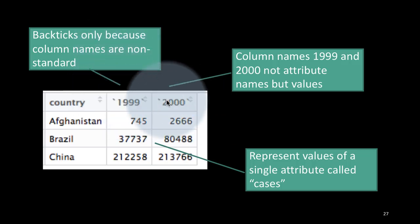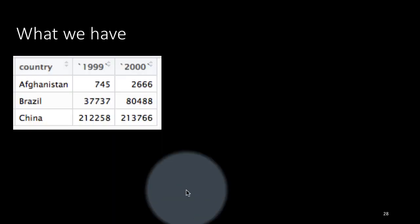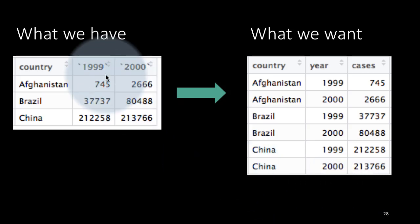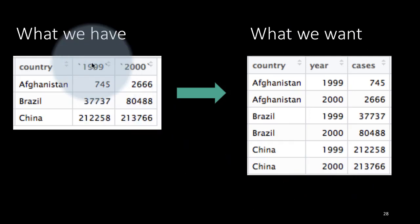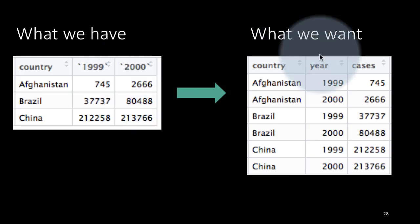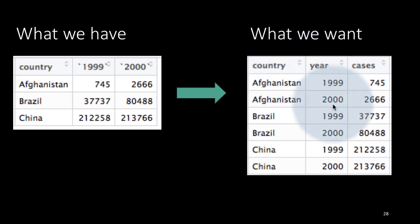We use backticks in the column names only because the column names are non-standard. If the column names were standard like year_one, year_two, we wouldn't need backticks. So this is what we have, and this is what we want. The information in both tables is exactly the same, but the form of presentation is different. We want to take information from the 1999 and 2000 columns and put them all into one column, where the years go into a column called 'year' and all the numbers go into a column called 'cases'. Once the data looks like this, we can do easy processing with it.